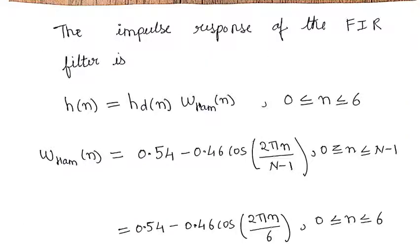The impulse response of FIR filter is given as H of N equals HD of N into the window function. In this numerical we are solving using the Hamming window, and the size of the window is mentioned as N ranges from 0 to 6.